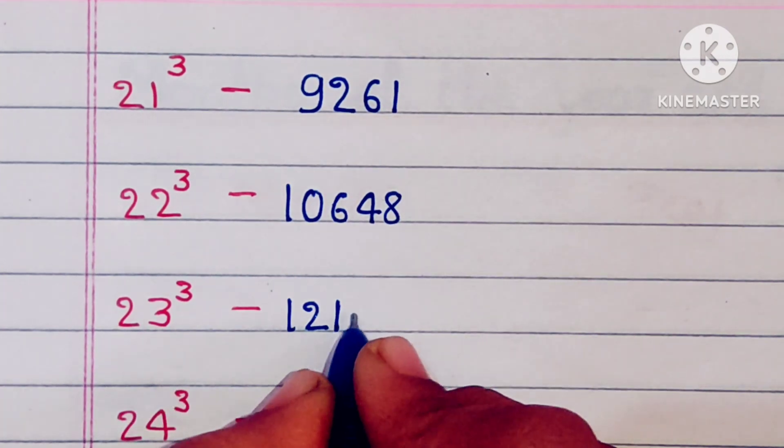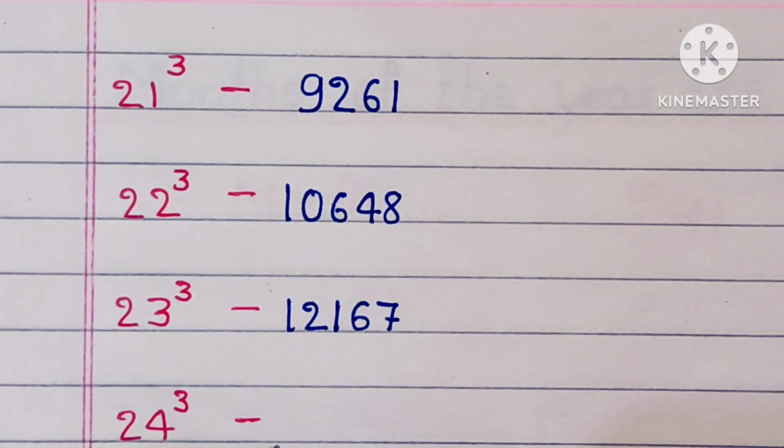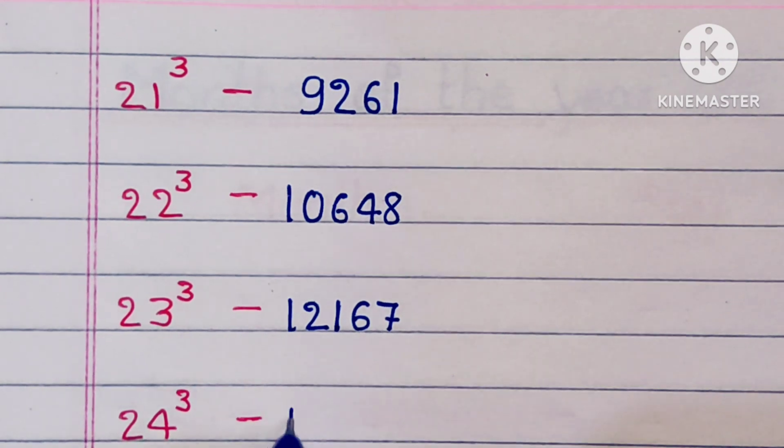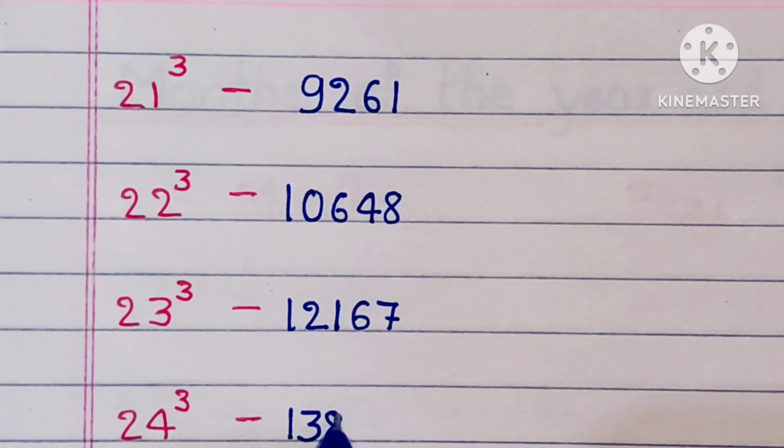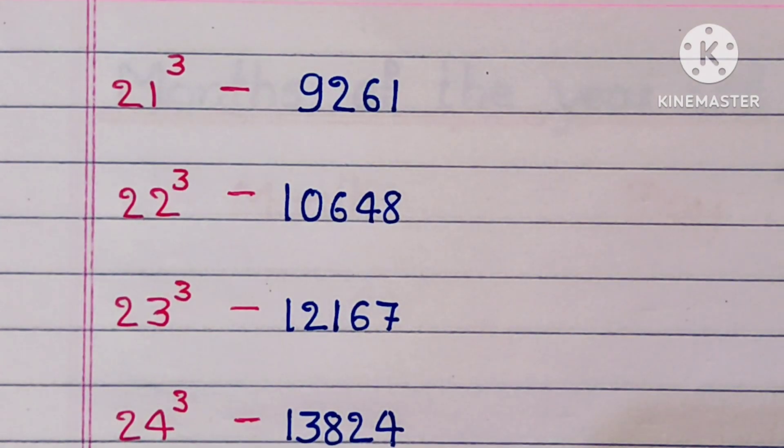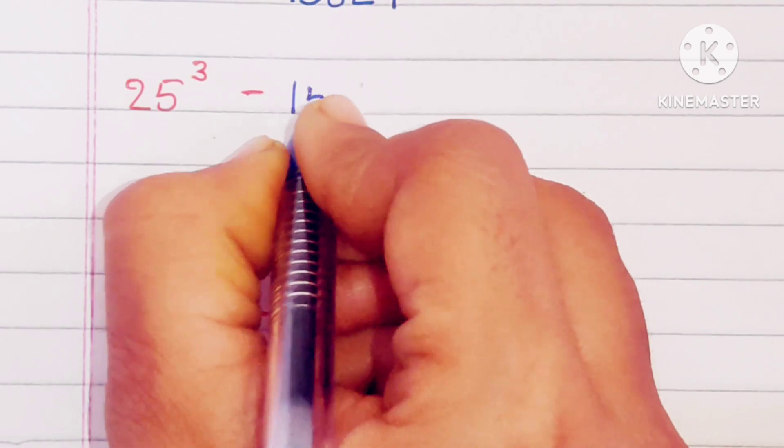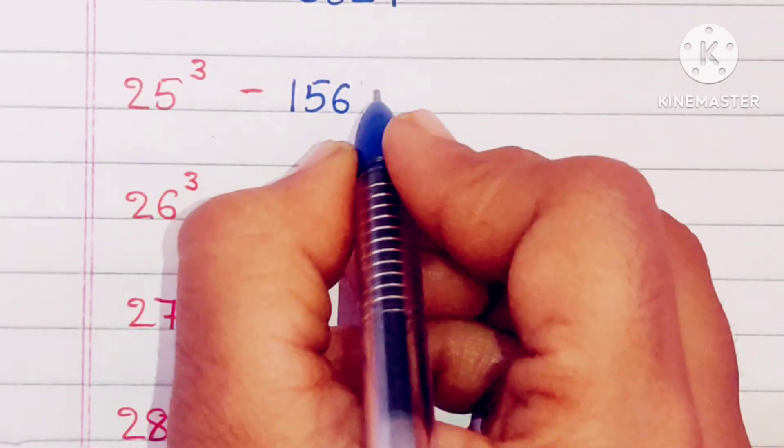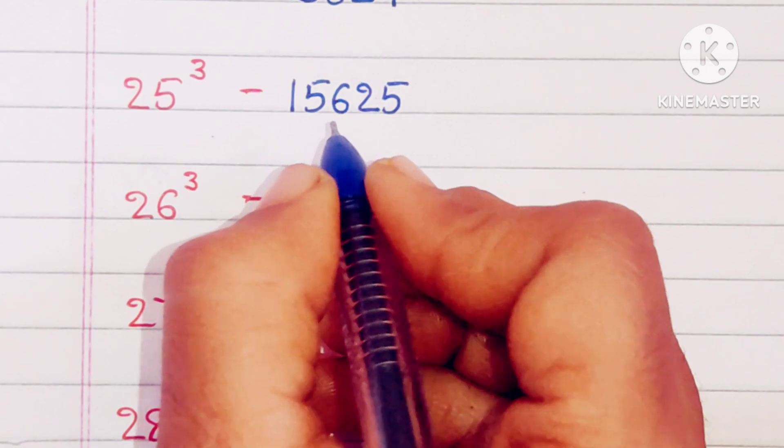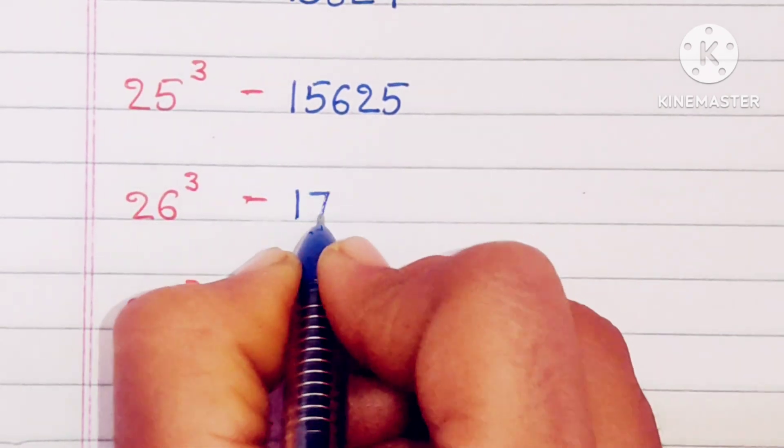23 cube is 12167, 24 cube is 13824, 25 cube is 15625.